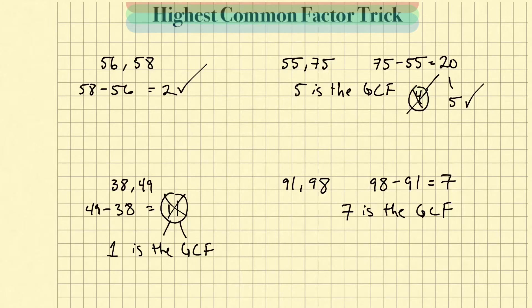Same with 98 — I'm going to double the digit 8, that gives me 16. Then I subtract 16 from 9, which gives me negative 7. Negative 7 is divisible by 7. So you can see that both of these numbers are divisible by 7.